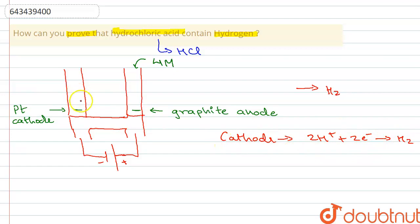And here we will observe the evolution of colorless gas. Now when this colorless gas is brought near a burning splinter, this colorless gas bursts into a flame, proving that it is a hydrogen gas. So when this gas that is being evolved is brought near a burning splinter...